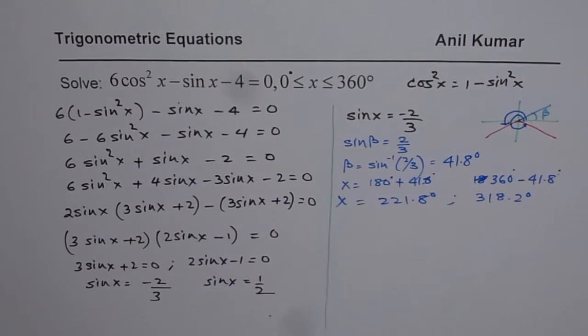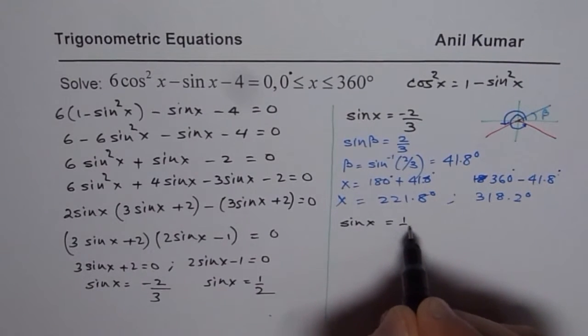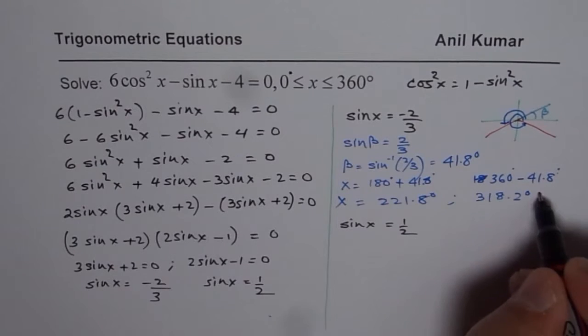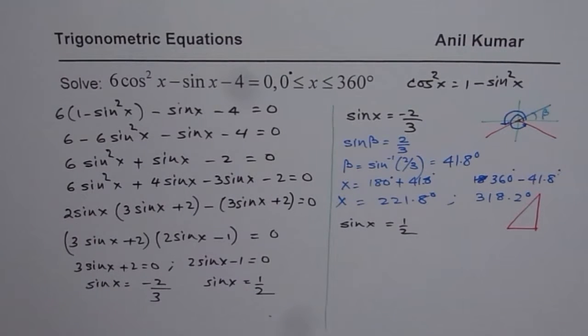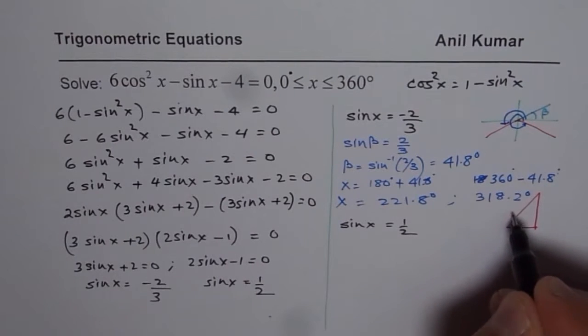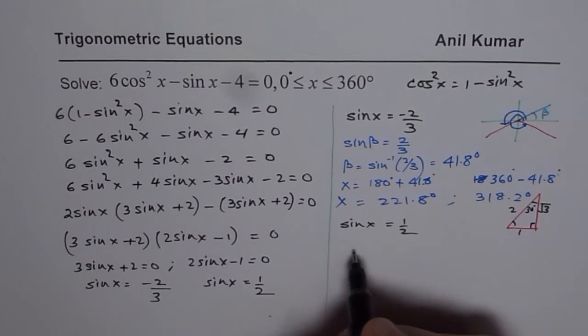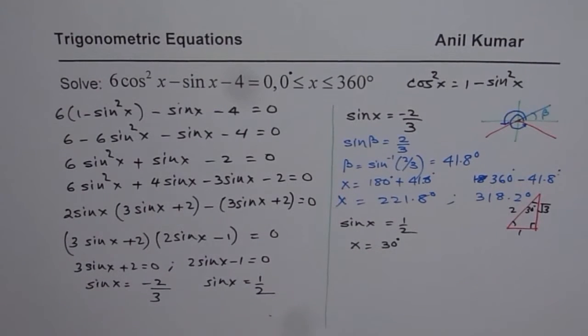Now the second factor is sin x equals to half. You can use special triangles. Whenever possible try to use special triangles rather than calculator. Well calculator you can always use. So we have 1, 2 square root 3 for the special triangle which is 30, 60, 90. Sin is half. So we are looking for 30 degrees. So we know x is equals to 30 degrees. So that is one solution.